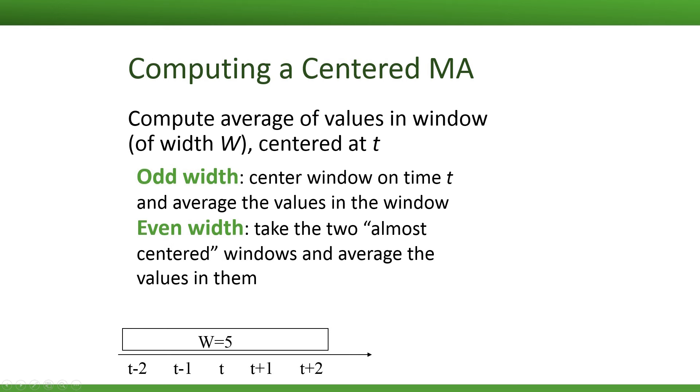For an even window width, we have a little bit of a problem. So what we're going to do is we will use two almost centered windows. For example, if I take a window of width 4, I would center these two windows around the almost center, and then I would compute the average in each one of these windows. Lastly, I would take an average of these two averages. This gives us the formula for a moving average for an even width window.